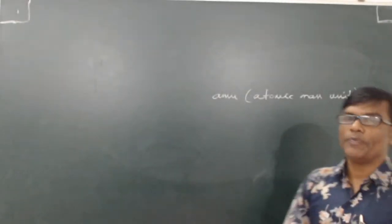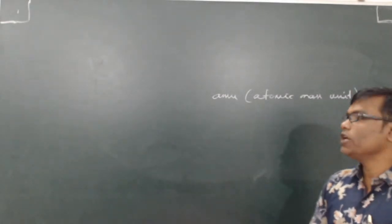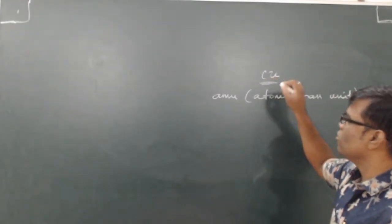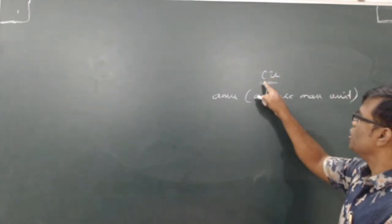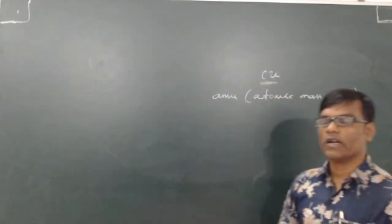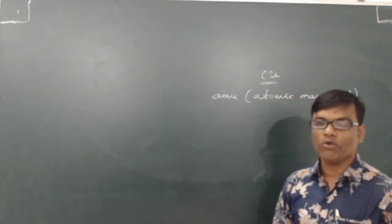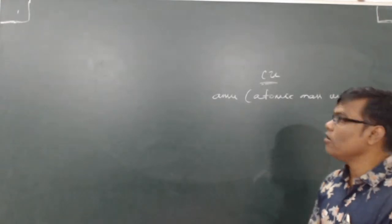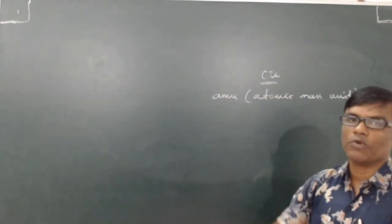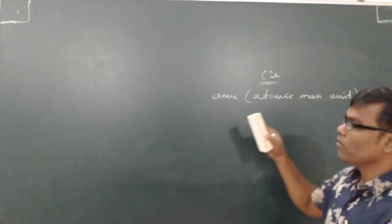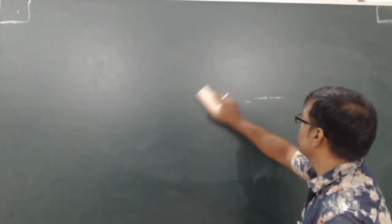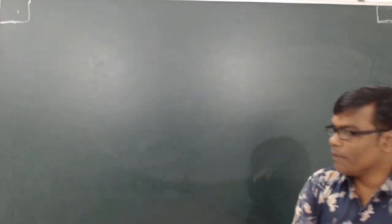AMU stands for atomic mass unit. Previously, another unit called 'CU' (carbon unit) was used, because at that time scientists used the carbon atom for comparing molecular mass. Now, AMU is generally used.